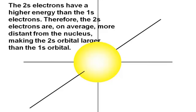The 2s is just a single orbital and can hold two electrons. The 1s orbital is still inside it, also holding two electrons. So with the two orbitals we now have, we can accommodate a maximum of four electrons — that brings us to beryllium. Beryllium is happy with the 1s and the 2s orbital.